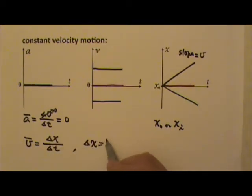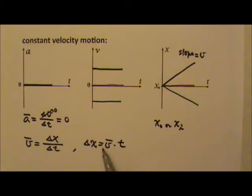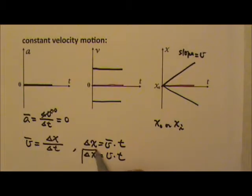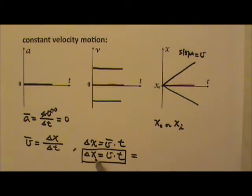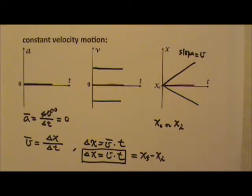The equation for constant velocity comes from the definition of average velocity: Δx over Δt. That means displacement equals average velocity times time. Because it's constant velocity, the average velocity is the same as the velocity at any moment, so we write Δx = v·t. This is the equation we use for constant velocity motion. For example, a car traveling at 55 miles per hour for two hours covers 110 miles. In many books, instead of writing Δx, they write the final position minus the initial position, which is the definition of Δx.